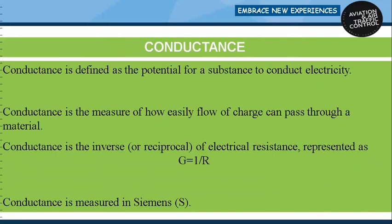Conductance, also known as electrical conductance, is defined as the potential for a substance to conduct electricity. Conductance is the measure of how easily a flow of charge can pass through a material. It is the inverse of electrical resistance and is represented as G = 1 / R. The unit of conductance is siemens.